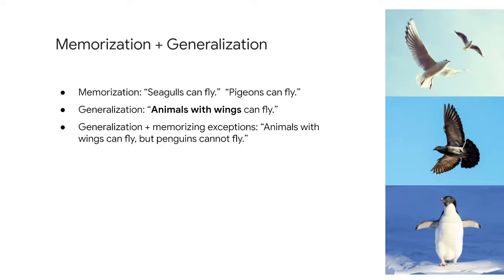Perhaps more powerfully, memorization also allows us to further refine our generalized rules with exceptions, like penguins can't fly. As we're exploring how to advance machine intelligence, we asked ourselves the question: can we teach computers to learn like humans do by combining both the power of memorization with generalization, making that leap from training to inference?